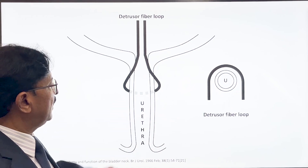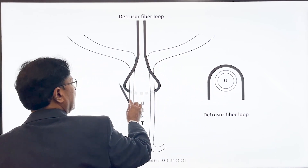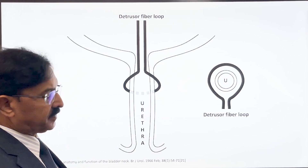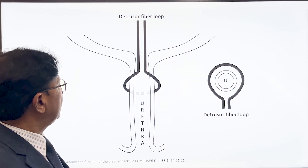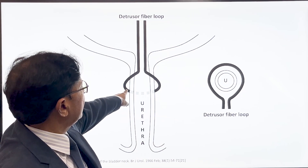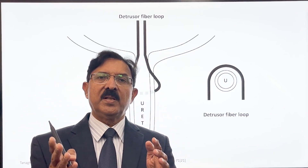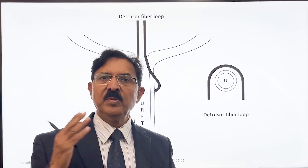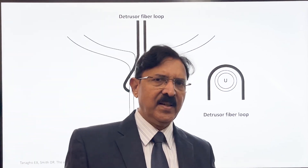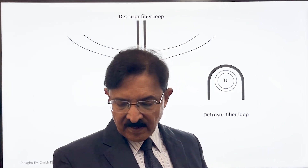The looping of detrusor fibers is not limited to only half of the circumference — it covers three-fourths of the urethra's circumference. This is the correct design. This understanding that the outer longitudinal muscles from the detrusor descend and course around the intramural urethra was studied in detail by Dr. Tanago and is well-established, substantiated by many micro-anatomical dissections on female cadavers.